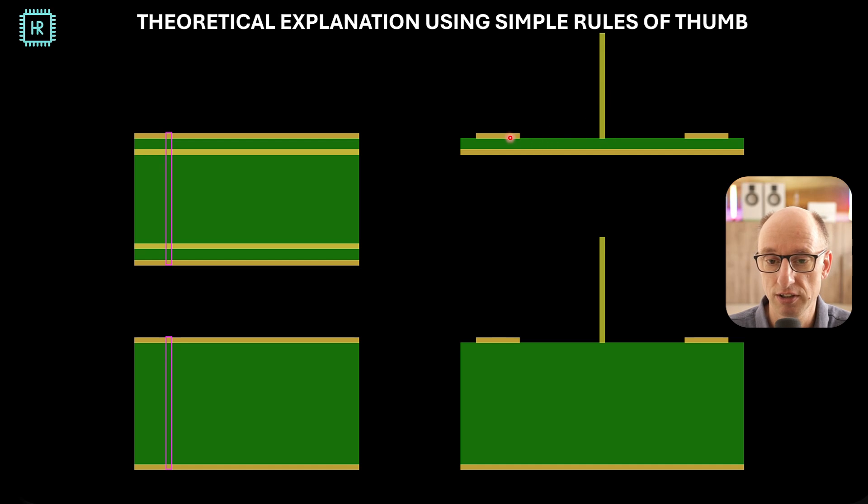If this capacitance to ground is much larger, the current will be much more likely to go there, than to go here. So here you basically see that if you bring the ground plane closer, you'll attack the problem from all directions. You'll first make the loops much smaller, and you'll make the capacitance to ground much larger.